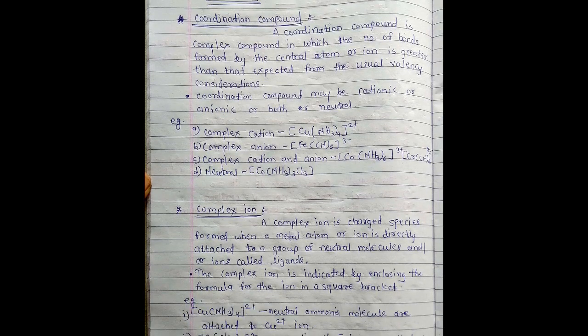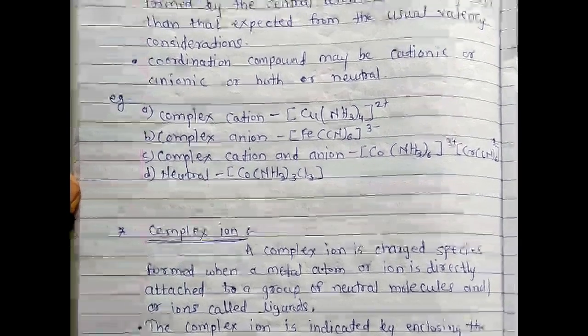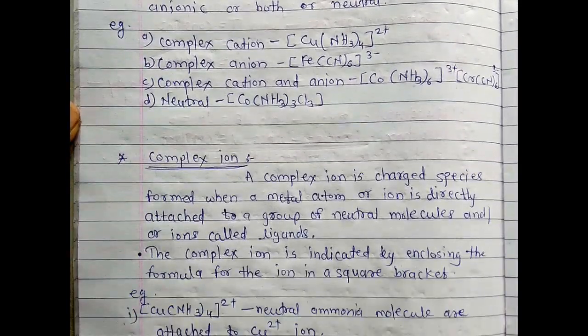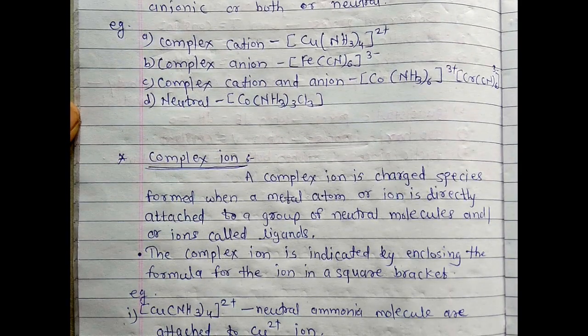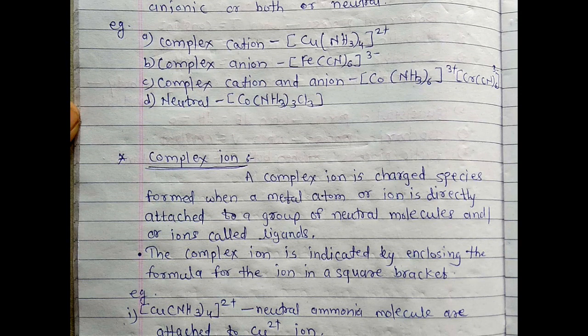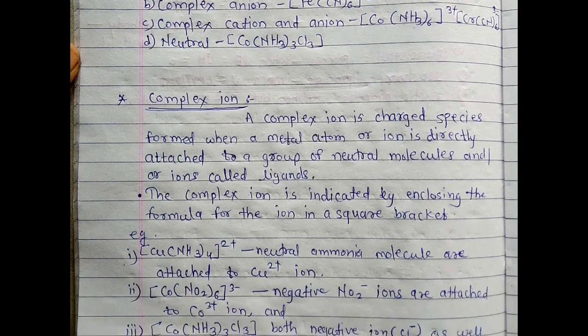Next term involved in coordination chemistry: complex ion. A complex ion is a charged species formed when metal atom or ion is directly attached to a group of neutral molecules and/or ions called ligands. The complex ion is indicated by enclosing the formula for the ion in a square bracket.